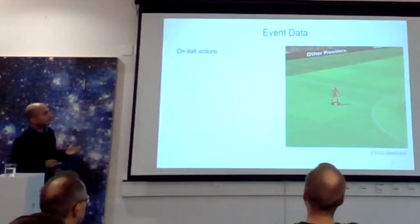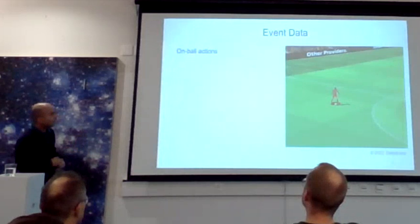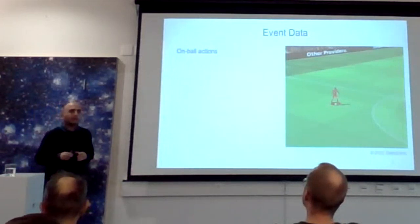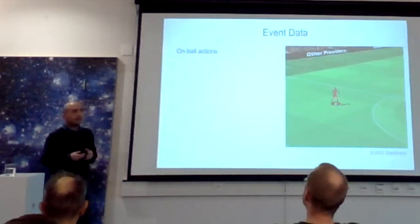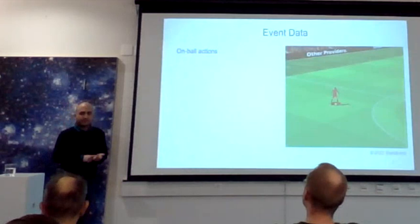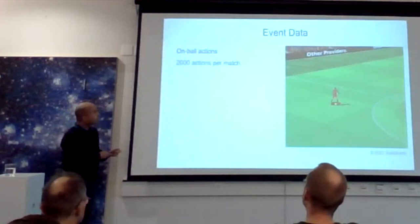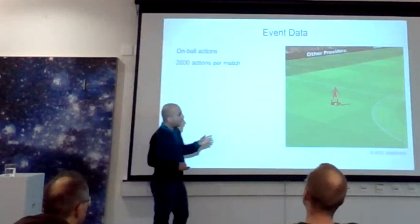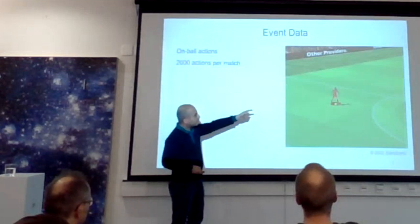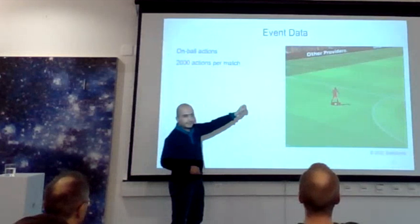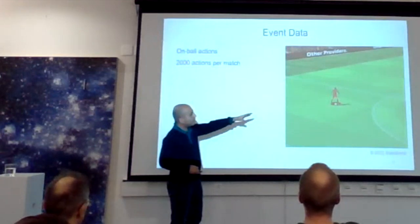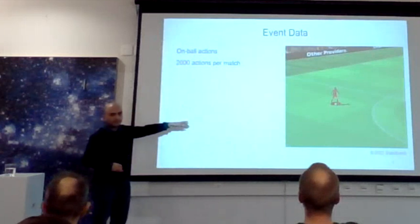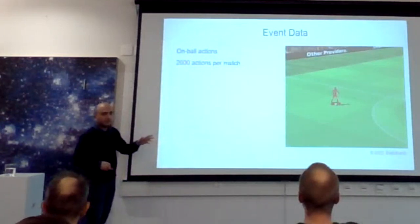The second is called event data. You can assume all actions that happen on the ball: passes, crosses, shots. This information and all the attributes related to it — like which player is taking the action, where, and what the outcome is — is recorded over a match. There are around 2,000 actions per match. However, you only know the player taking the action — you don't know anything about everyone else on the pitch, so it gives you only partial information about that moment.